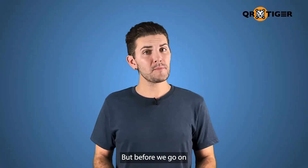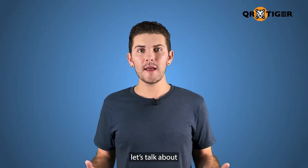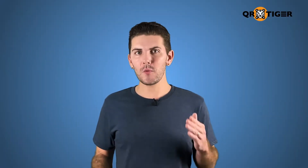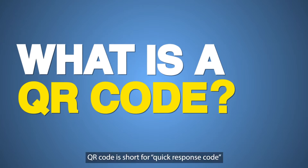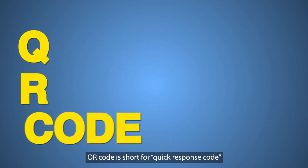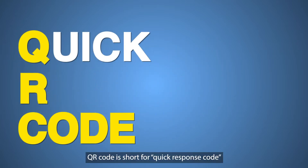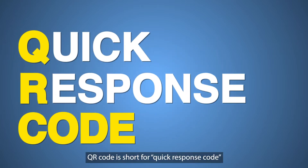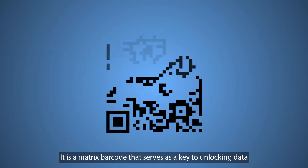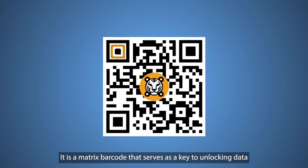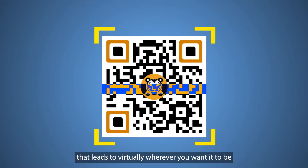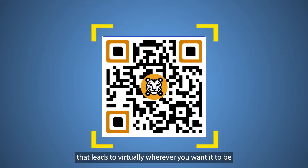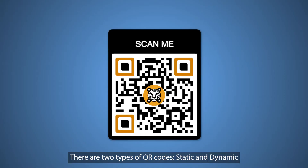But before we go on, let's talk about what a QR code is. QR code is short for quick response code. It's a matrix barcode that serves as a key to unlocking data that leads to virtually wherever you want it to be.